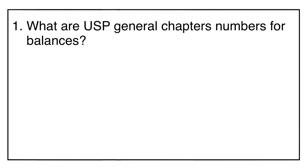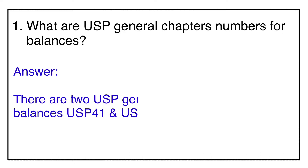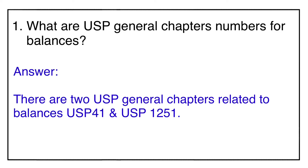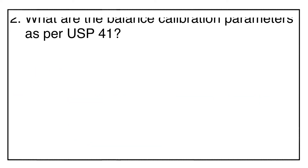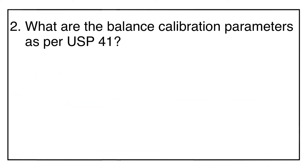Question number one: what are the USP journal chapter numbers for the balances? The answer is there are two USP journal chapter numbers related to balances, and those are USP journal chapter number 41 and USP journal chapter number 1251.